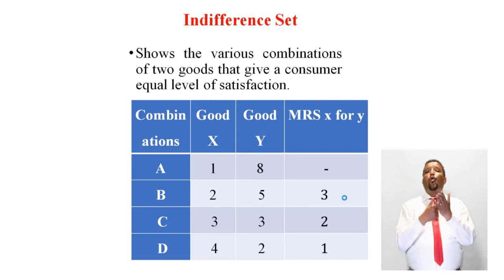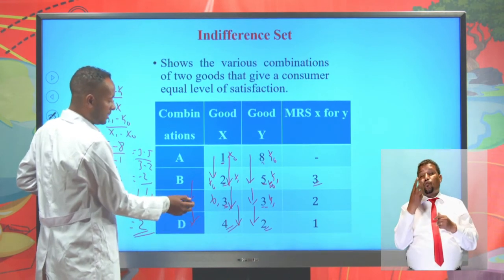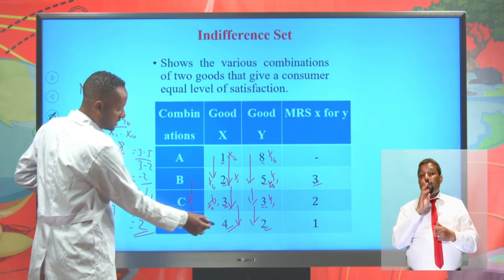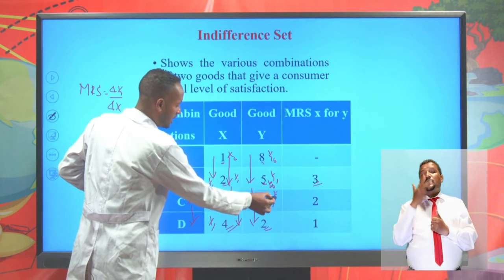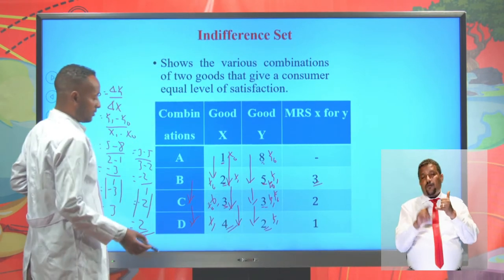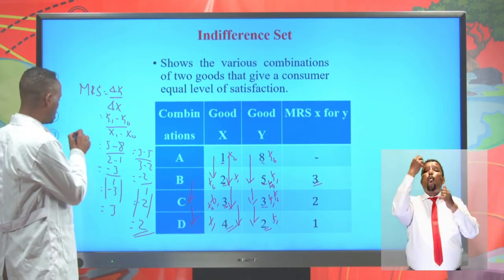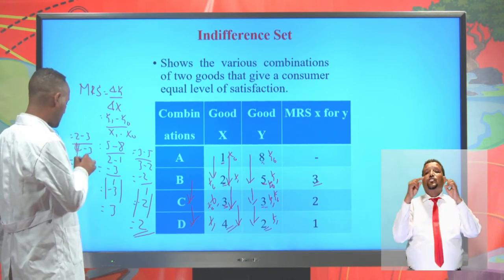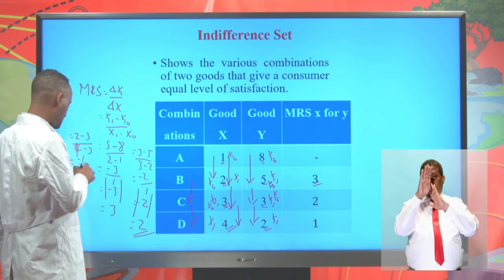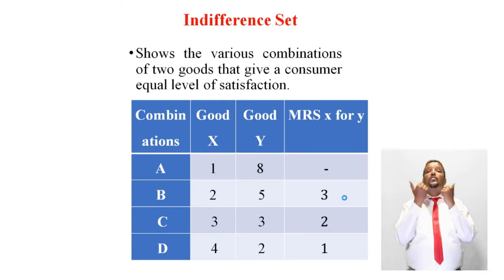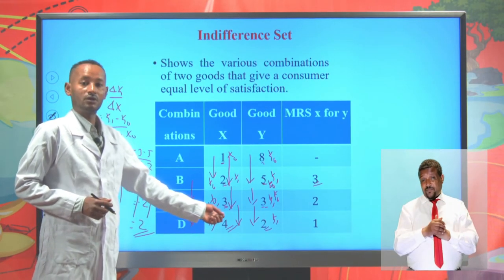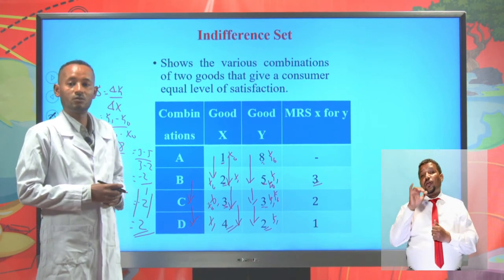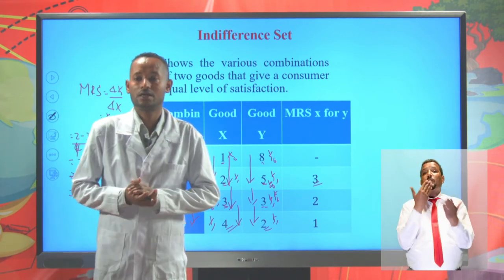When we come from combination C to D, the satisfaction from three units of X and three units of Y equals that from four units of X and two units of Y. Taking X initial = 3, X final = 4, Y initial = 3, Y final = 2: MRS = (2 − 3) / (4 − 3) = −1 / 1 = −1. In absolute value, MRS = 1. So the rate by which one commodity is substituted for another, the MRS, is one unit from C to D.